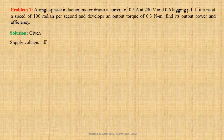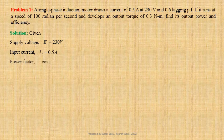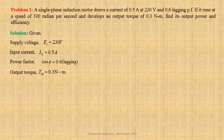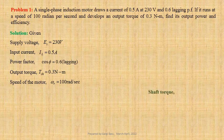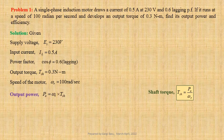Supply voltage Et equals to 230 volts. Input current Il equals to 0.5 ampere. Power factor cos phi equals to 0.6 lagging. Output torque Tsh equals to 0.3 Nm. Speed of the motor omega r equals to 100 radian per second. Since output torque or shaft torque Tsh equals to Po divided by omega r, output power Po equals to omega r into Tsh.